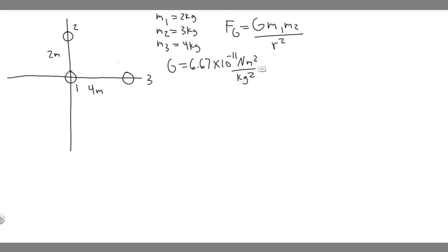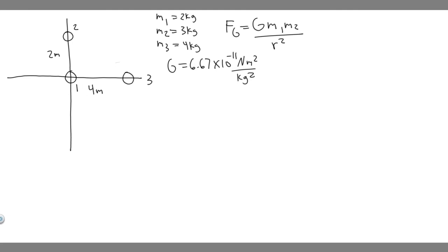We're going to find two gravitational forces individually and then take the resultant of those two. M1 and M2 are just going to be the two objects you're finding the force between. R is just the distance between the two objects. In this case, when we do the first pair it's going to be 4 meters, and for the second pair it's going to be 2 meters — you just square that.